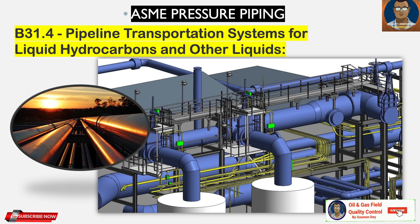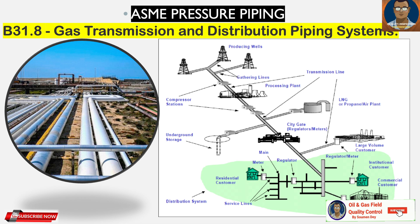B31.8 is for gas transmission and gas distribution piping systems. This code covers the design, fabrication, installation, inspection, and testing of pipeline facilities used for the transportation of gas. This code also covers safety aspects of the operation and maintenance of those facilities. B31.8S covers managing system integrity of gas pipelines and is a supplementary standard in addition to B31.8.